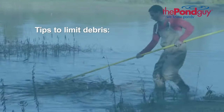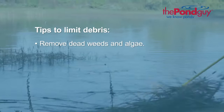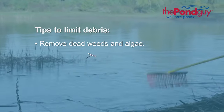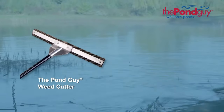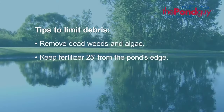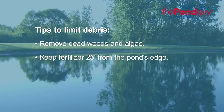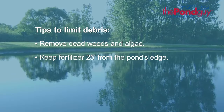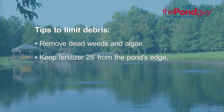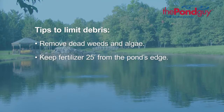Here are some helpful tips. If you chemically treat the pond, remove any dead weeds and algae a week or two after treatment. You can do this by using the Pond Guy weed cutter and pond and beach rake. When fertilizing, stay approximately 25 feet away from the pond's edge. This will create a barrier around your pond, helping to prevent the fertilizer from leaching into the water and feeding future weed and algae growth.